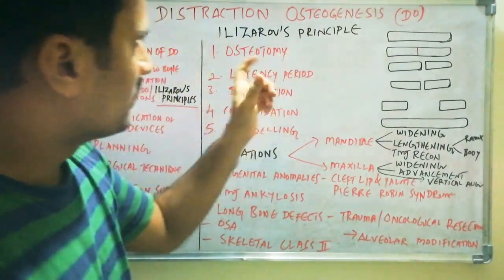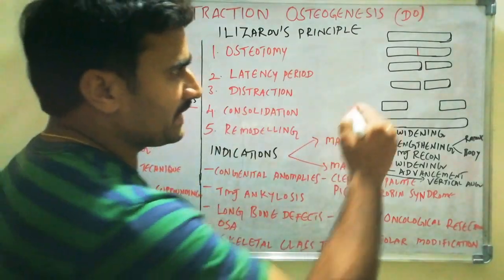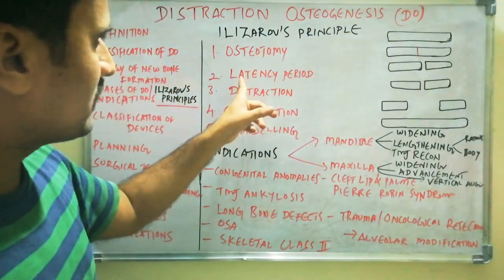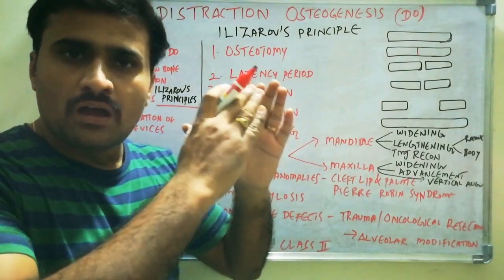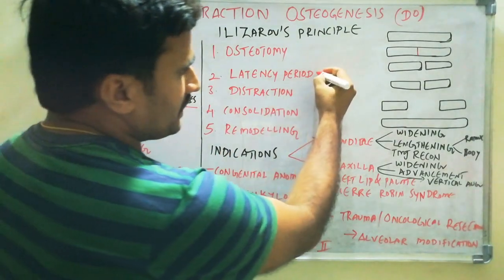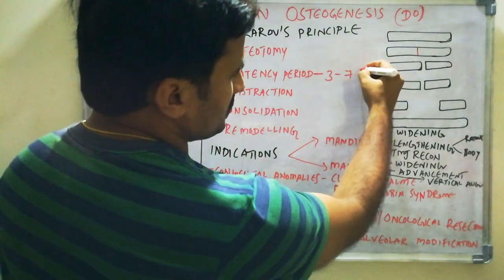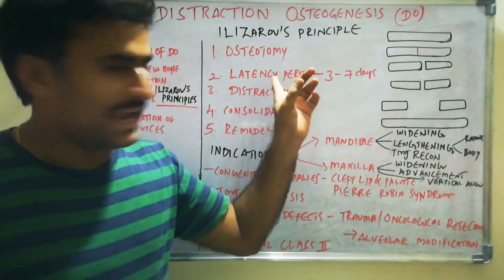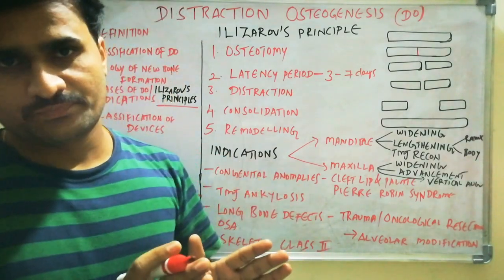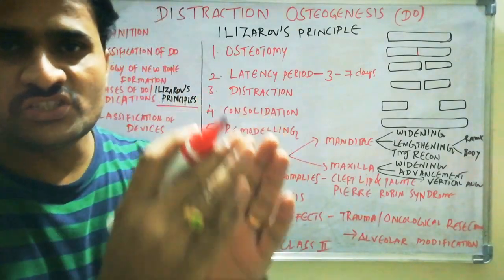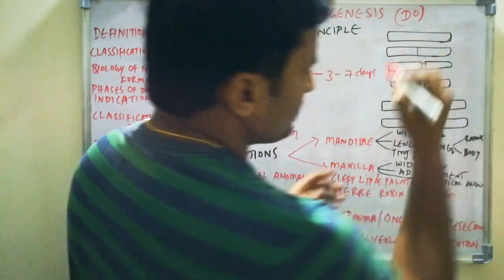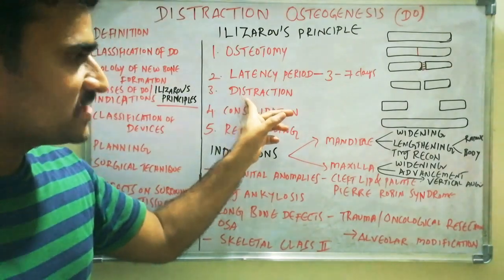The first step is osteotomy — making a cut in the bone, shown as the red line. After that is the latency period — the period from osteotomy to the initiation of distraction, extending from 3 to 7 days. The latency period allows for soft callus formation at the osteotomy line.